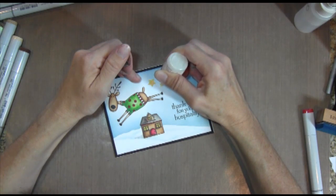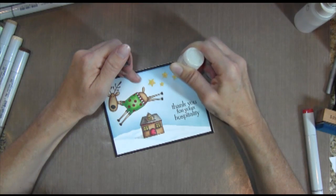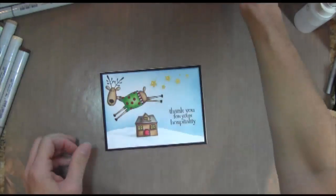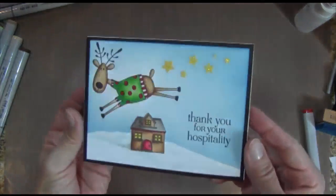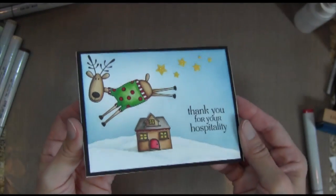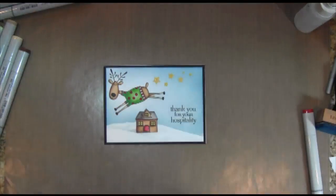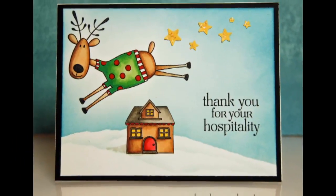And then finally I'm adding some Stampin' Up Dazzling Details, which is pretty much like stickles. It's just glitter glue on top of my stars to give them a little sparkle. And that's it. I hope you enjoyed it. I think this is a great card for a party host, and a lot of fun. So anyway, I hope you enjoyed it, and I'll see you next week. Thanks for watching.